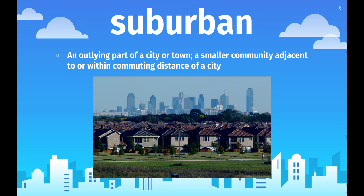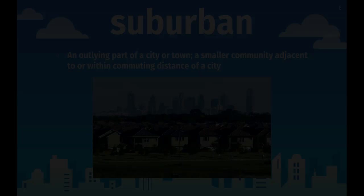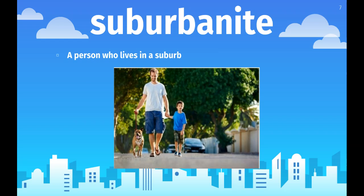What you're going to do with the other words in the bottom box in each column is sort the rest of these words as we go through them into which category they go. Your next word is suburbanite — this is a person who lives in a suburb.